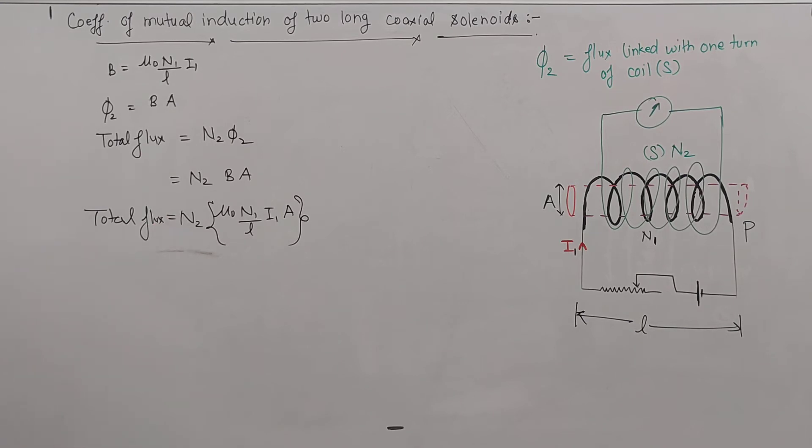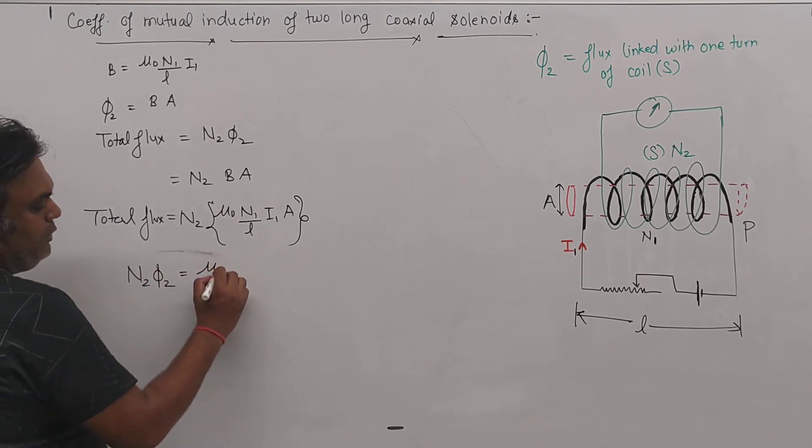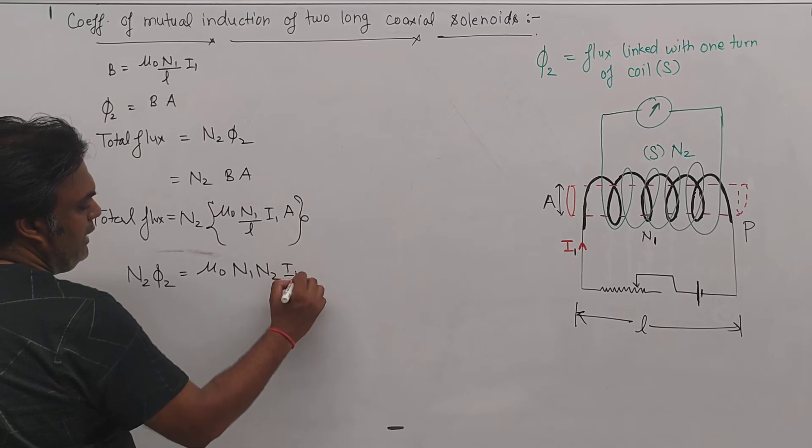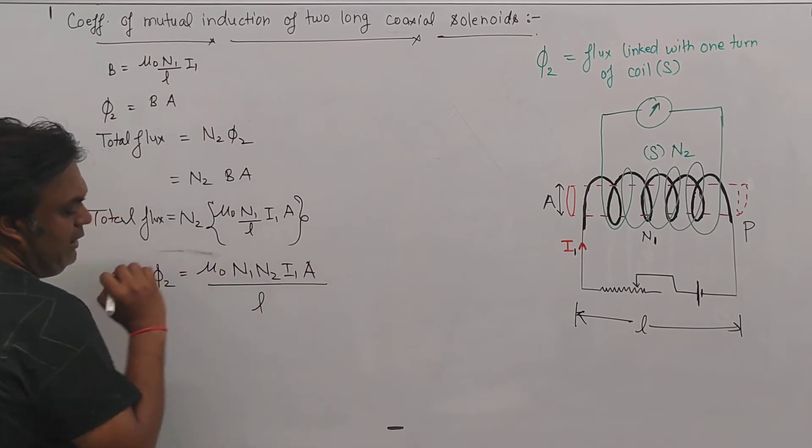Now this total flux is represented by n2 into phi2, which is equal to μ₀n₁i₁A/l.